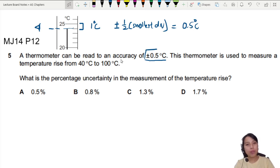Okay, so that's where we get the uncertainty of 0.5 for thermometers. And pretty much any scale, every time you look one time, you read one time, that's going to be half the smallest division. But anyway, here you are measuring a temperature rise from 40 to 100. What is the percentage uncertainty in the measurement of this temperature rise?